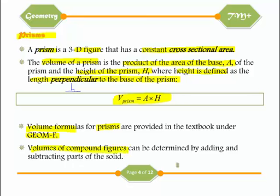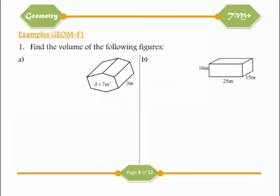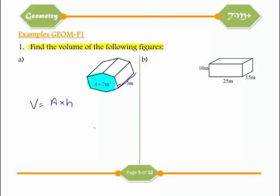Volumes of compound figures can be determined by adding and subtracting parts of the solid. Looking at the first example: this is a prism because cutting the solid along one direction gives the same cross-sectional shape every time. The cross-sectional area is given by that irregular polygon. So volume is A times H — that's 7 times 3, which is 21 metres cubed.